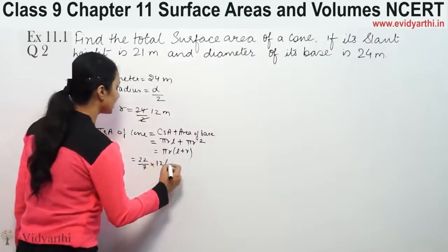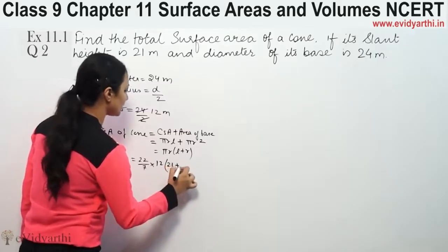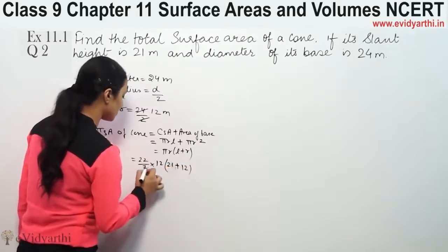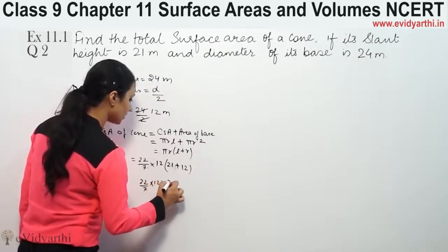Radius is 12, slant height is 21, plus radius is 12. So we get 22 by 7 into 12 into 33.